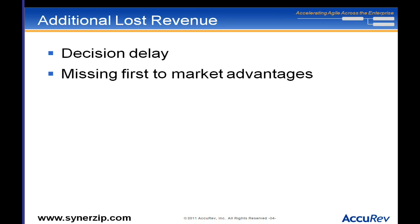Deciding something is important is the first step; deciding to actually do it is the next. Reducing the time between those two decisions is very valuable. Look at how much work is involved to get something initiated and funded — that is often one of the most valuable places to look to reduce your cost.